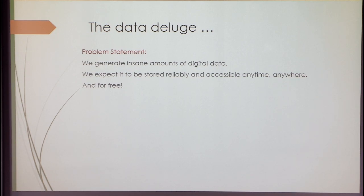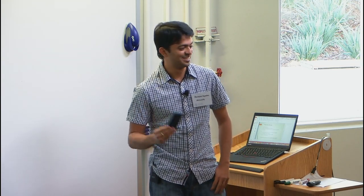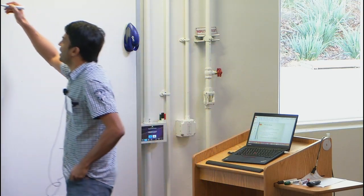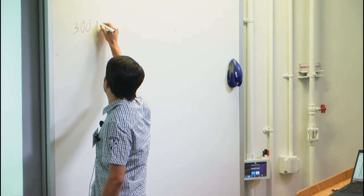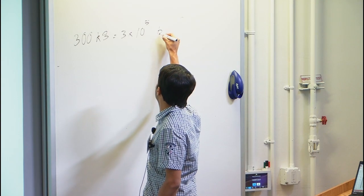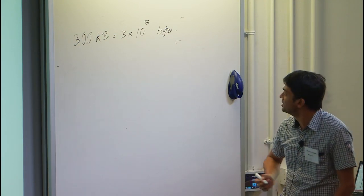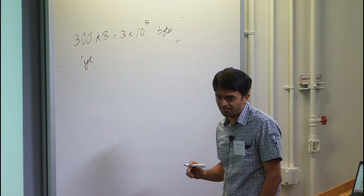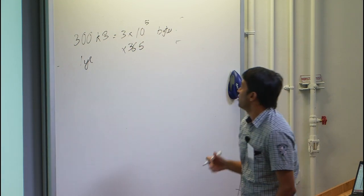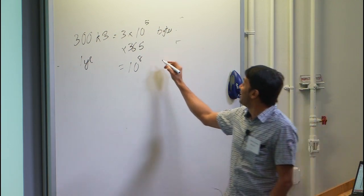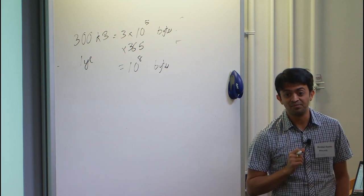How much does a typical photo taken on a phone like this cost in storage? I actually checked this out for this talk. A reasonable answer is around 300 kilobytes — say 200 to 400 kilobytes. That's 3×10^5 bytes. If I take one photo a day and there are about 360 days in a year, in one year just the photos I take alone will be about 10^8 bytes — roughly 100 MB of data generated on my phone every year.